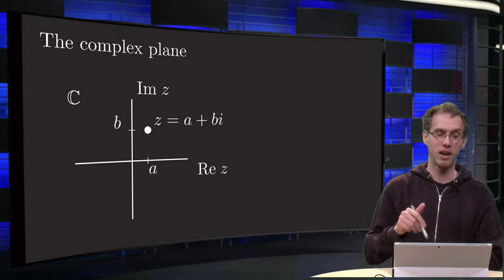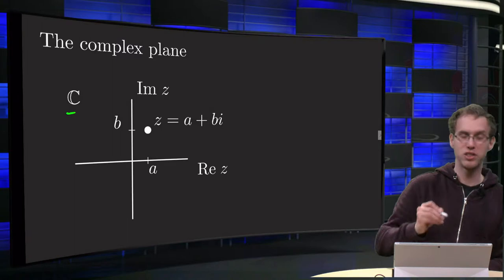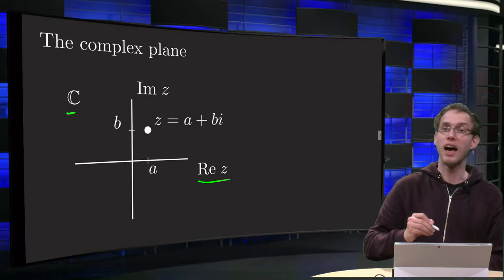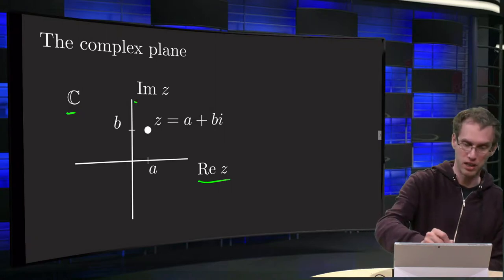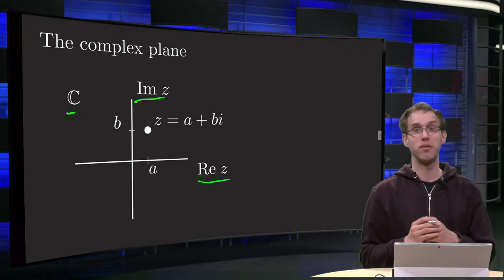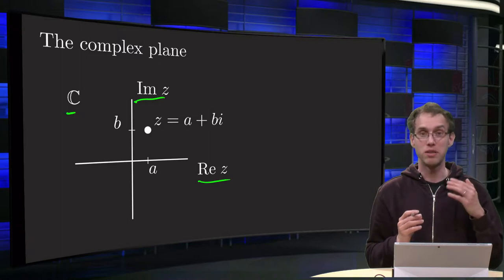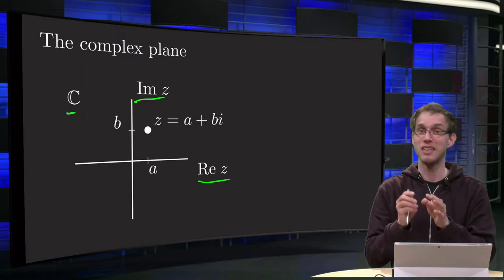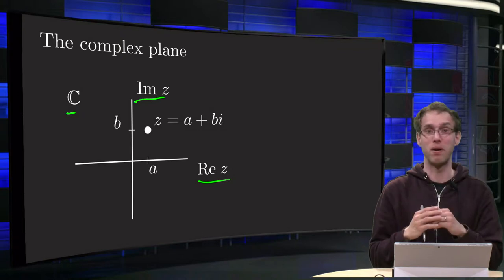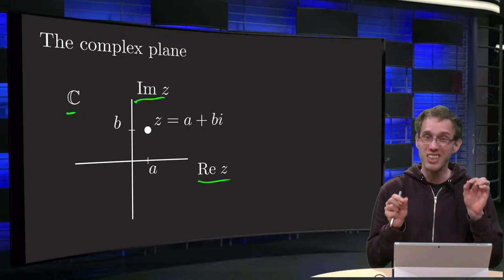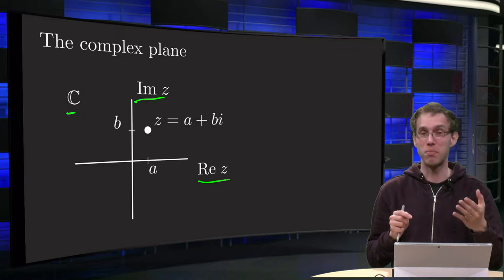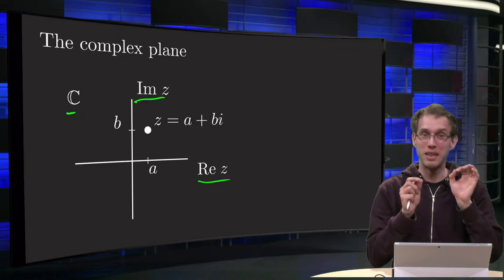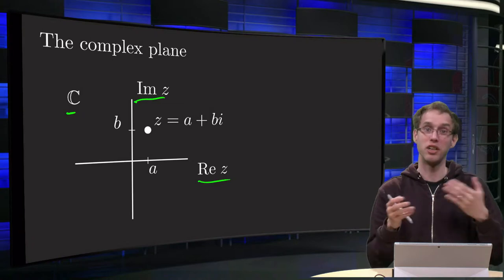So what does it look like? Here we have our complex plane C. We have two axes: the real axis where we put the real part of Z, and the imaginary axis where we put the imaginary part of Z. Notice that both the real part of Z and the imaginary part of Z are real numbers. The imaginary part is the part in front of the i, so the imaginary part itself is just a real number.